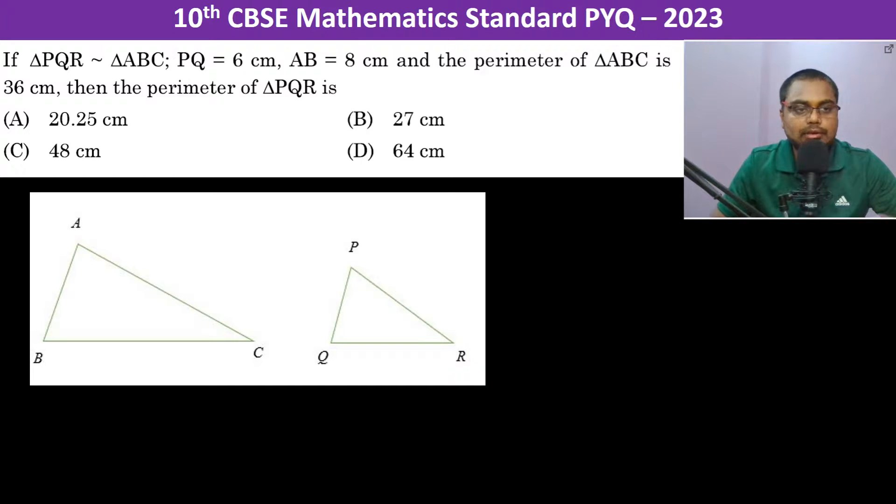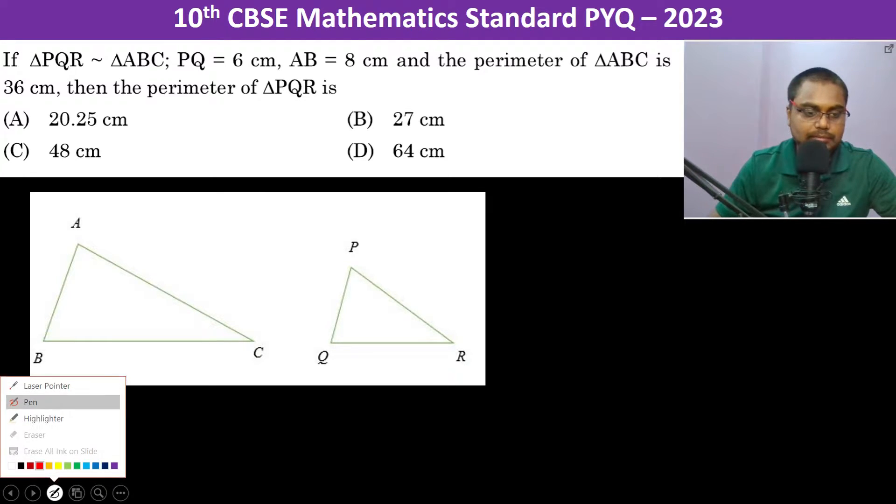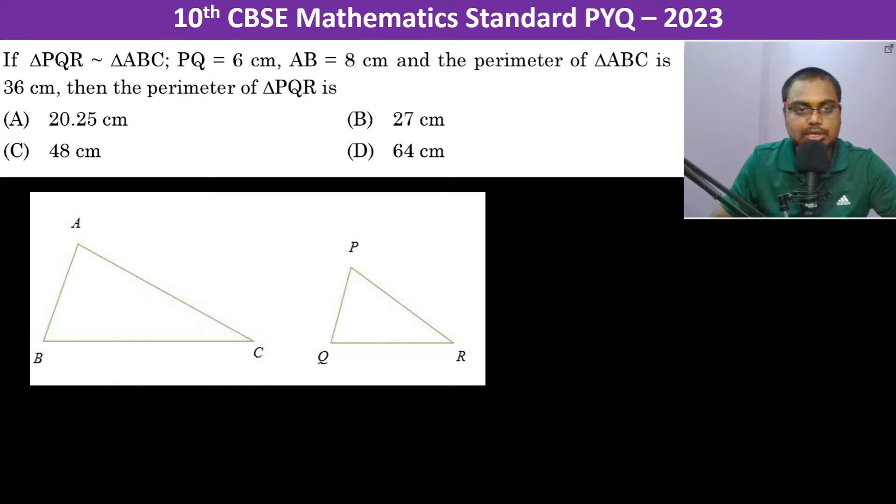In triangle PQR and triangle ABC, they are similar. So we know that the ratio of the sides is going to be the same. Therefore, PQ by AB is going to be equal to PR by AC, which equals QR by BC.